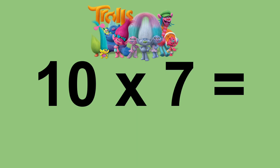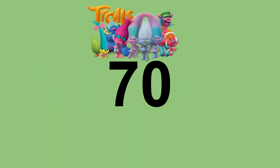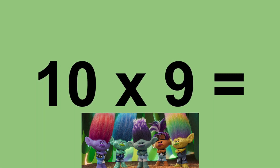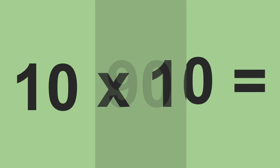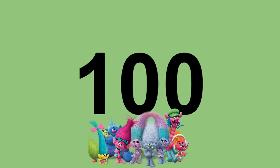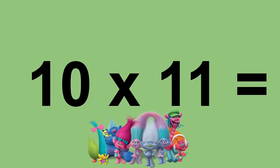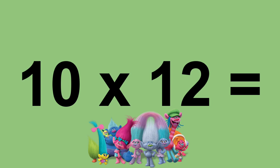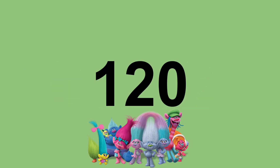Ten times seven equals seventy. Ten times eight equals eighty. Ten times nine equals ninety. Ten times ten equals one hundred. Ten times eleven equals one hundred and ten. Ten times twelve equals one hundred and twenty.